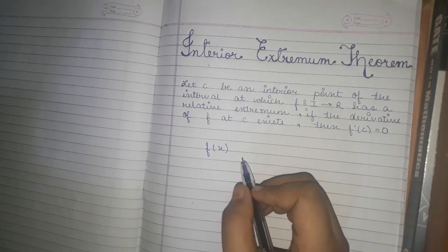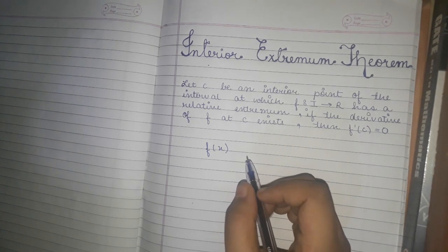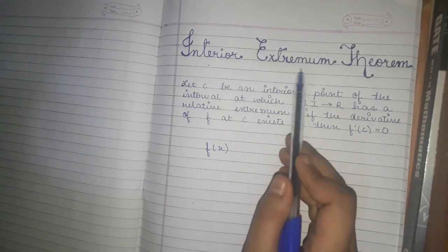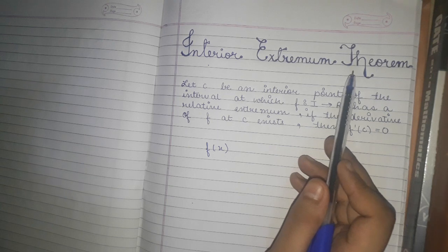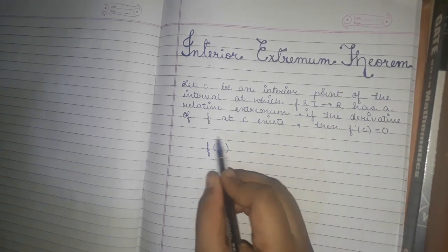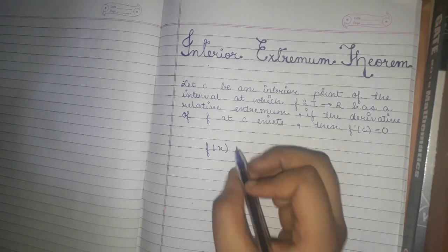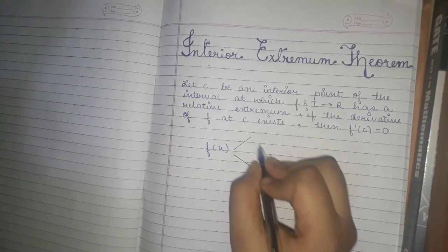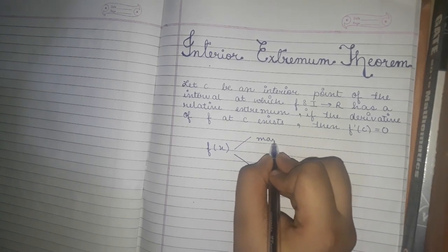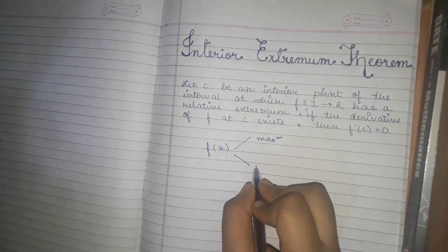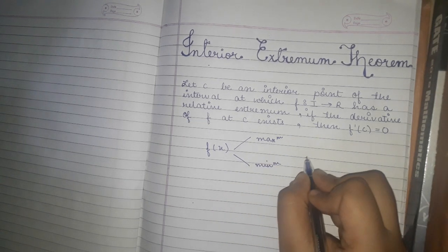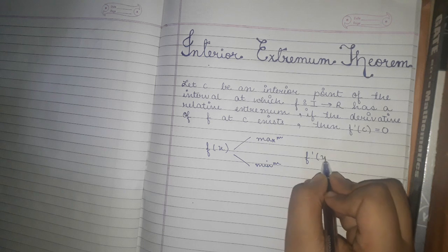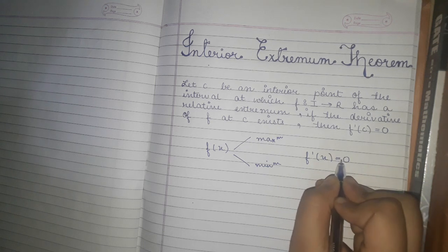In this video we will discuss the Interior Extrema Theorem. Whenever we have a function f(x) and we check for maxima and minima at a certain point, we consider f'(x) to be equal to 0. So to find maxima and minima, we set f'(x) = 0 for critical points.